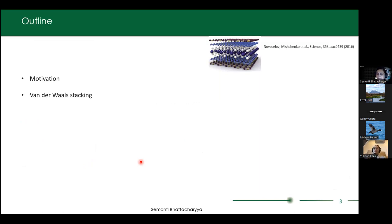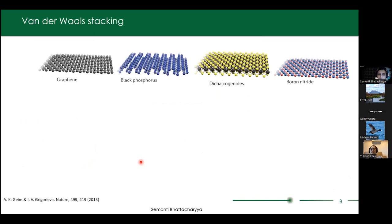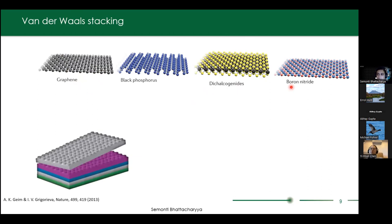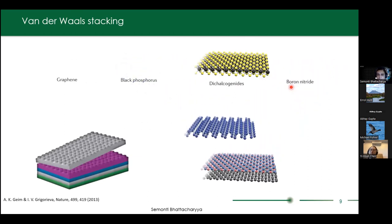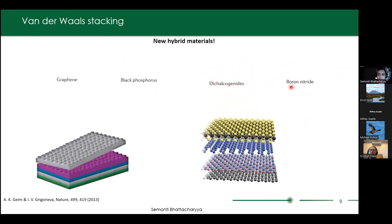We wanted to ask how we can carefully tune the environment of these fermions to tune their behavior, creating interesting properties or optimizing existing electronic properties. We use a well-known technique called van der Waals stacking. Van der Waals materials consist of loosely packed sheets of 2D material. Because these sheets are very loosely packed, we can easily isolate individual sheets, which are usually monoatomic thin or a few atoms thick. Examples include graphene, black phosphorus, dichalcogenides, and boron nitride, and using van der Waals forces we can stack them like Legos.